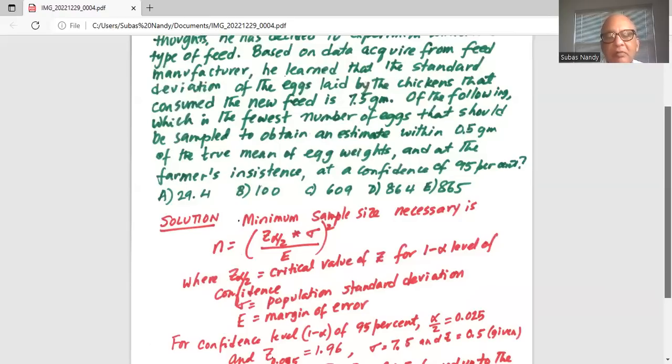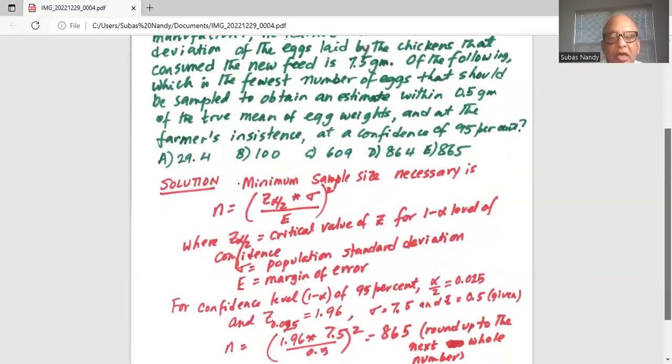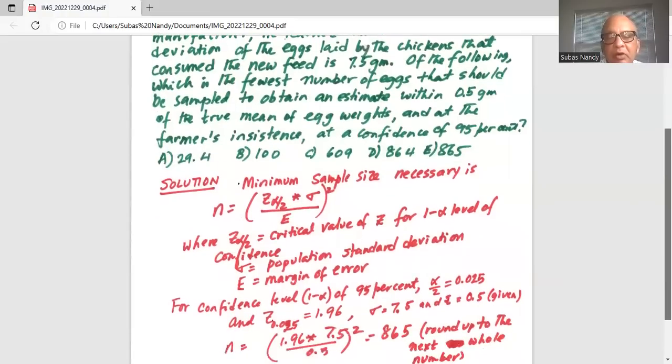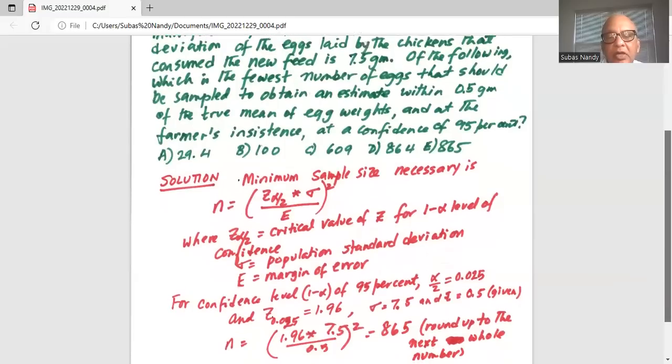For confidence level 1 minus alpha of 95%, so 1 minus alpha is 0.95, alpha is 0.05 and alpha by 2 is 0.025 and z critical value 0.025 is 1.96.